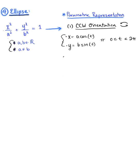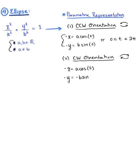For clockwise orientation or clockwise revolution about the ellipse, the case is very similar to the circle. The parametric equation for x is a·cos(t) and the parametric equation for y is −b·sin(t). Again, for a full revolution, t is greater than or equal to 0 and less than or equal to 2π.